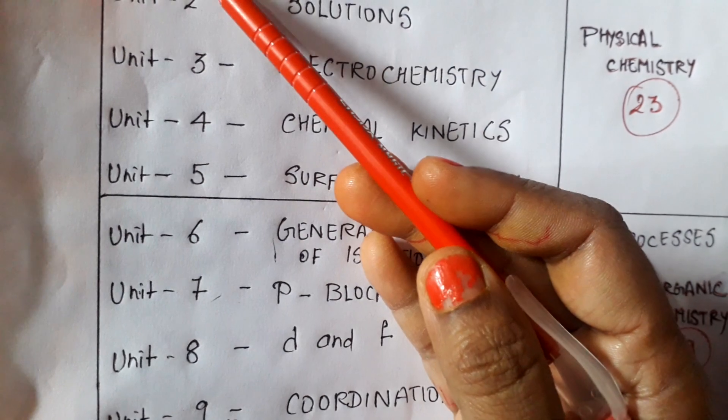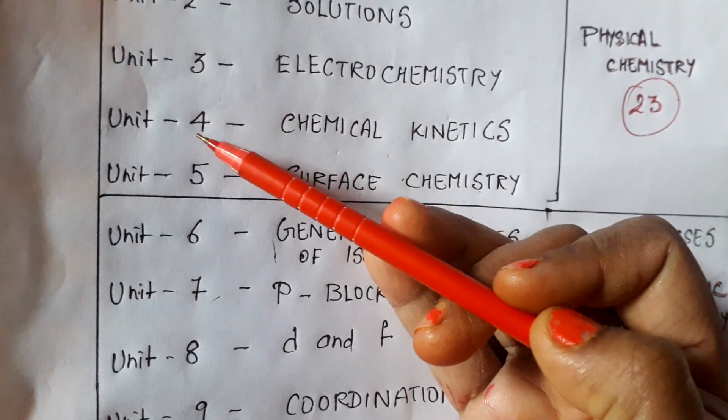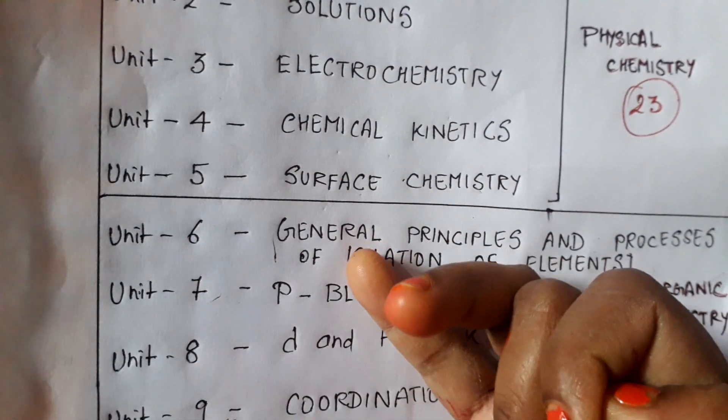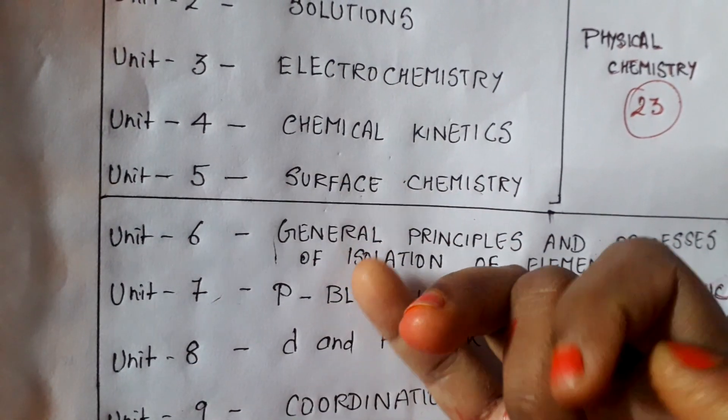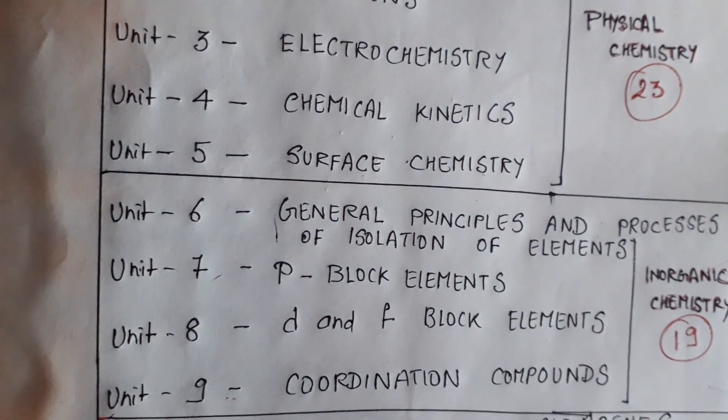In part 1, the units are: unit 1, unit 2, unit 3, unit 4, unit 5, unit 6, unit 7, unit 8, and unit 9. And in part 2, we have to study a total of 7 units.